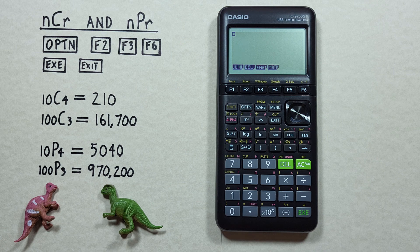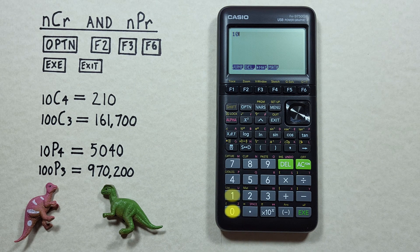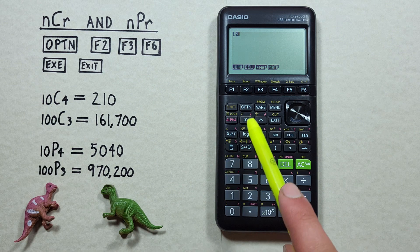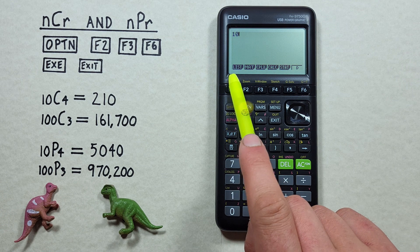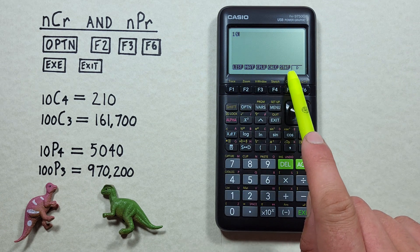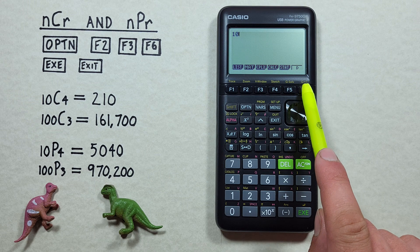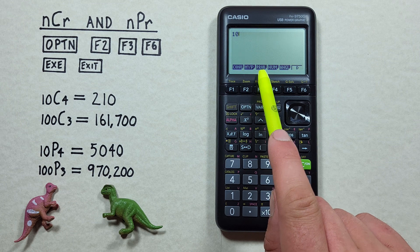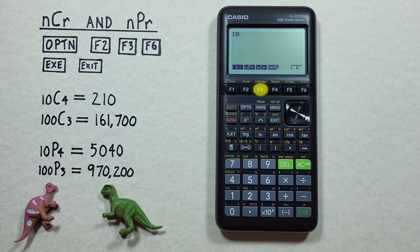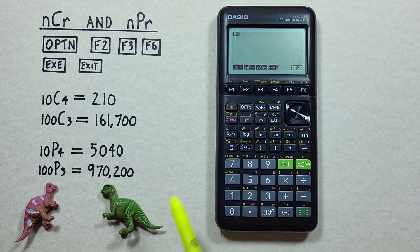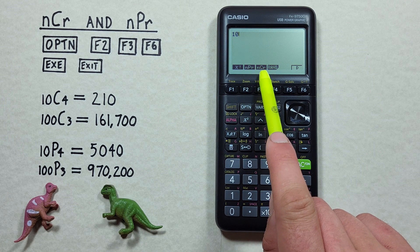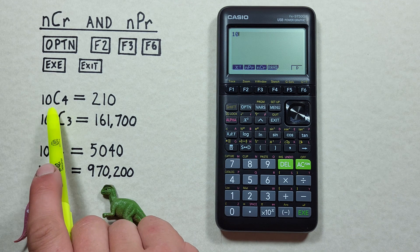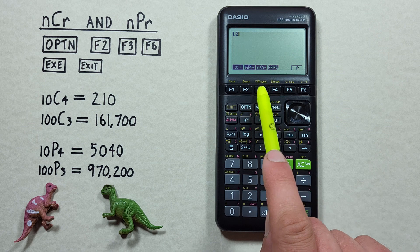To do this, first we place 10 on our screen, and then we need to get the C or combination symbol. So to do that, we press the Option key, and then we don't see the probability menu here, so we press the F6 to go to the next menu, and now we see PROB, or the probability menu. We press F3, and now we see we have permutations and combinations as options in our menu. So for this example, we're doing combinations, so we press the NCR or F3 key.